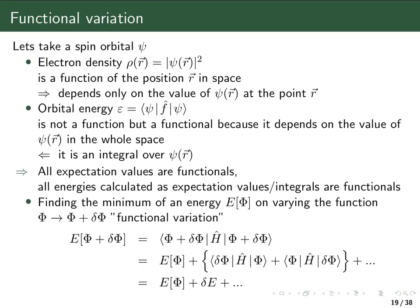Let's consider a spin-orbital ψ and two different quantities calculated from it. The first is the electron density ρ. By the Born interpretation of the wave function, the electron density is just the norm squared of the spin-orbital ψ. The density is a function of position r in space, and its value depends only on the value of the spin-orbital at that point r. So the density is a simple function of the point r.